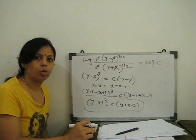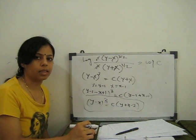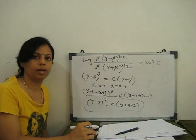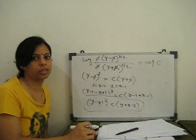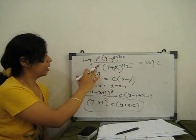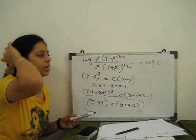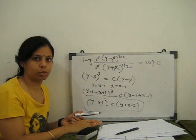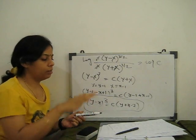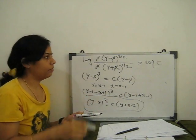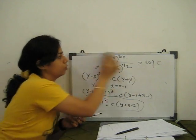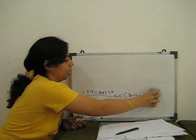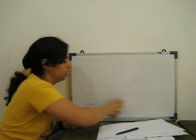That is the reducible to homogeneous method. First we substitute small x and small y in terms of capital X and capital Y, solve the resulting homogeneous equation, and at the end substitute back. I will also give you the same example solved with another method.